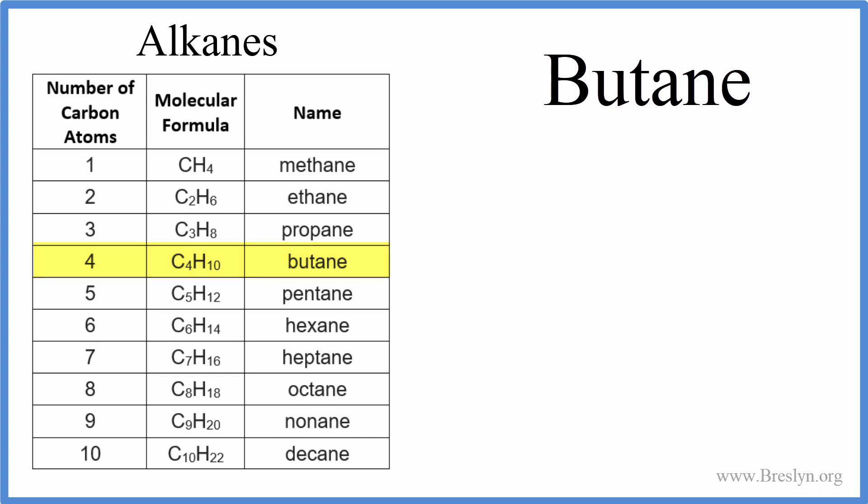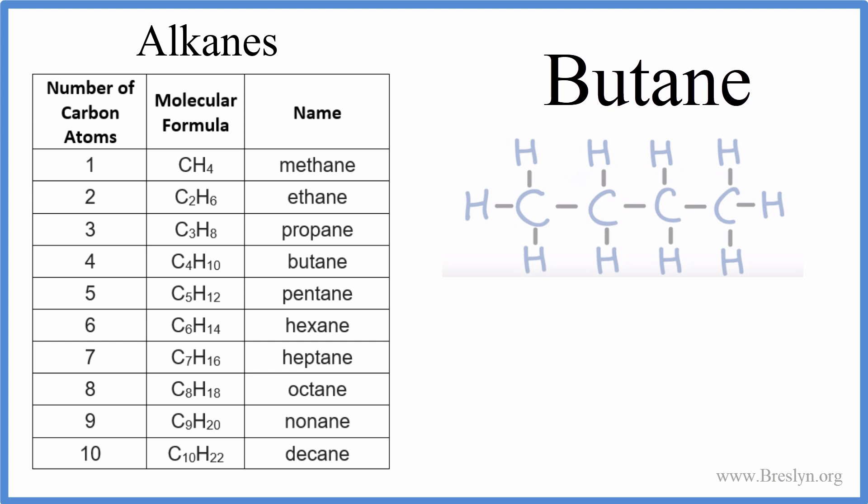If we wrote the structure for that, we could see we have one, two, three, four carbons surrounded by hydrogens — 10 of them — and they're all single bonds. So that's butane; that's the structure for it.